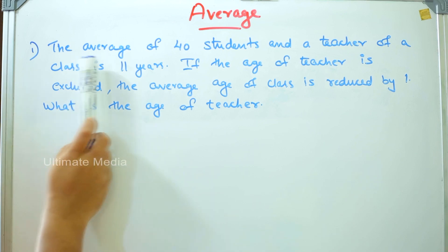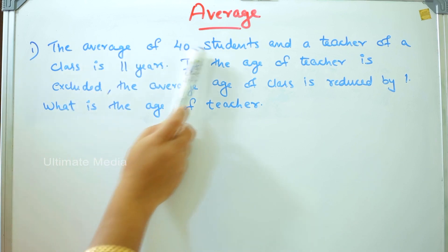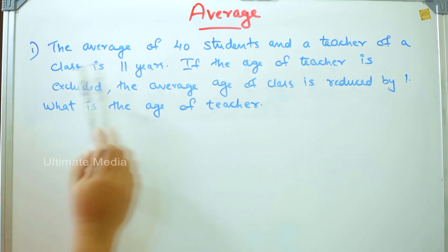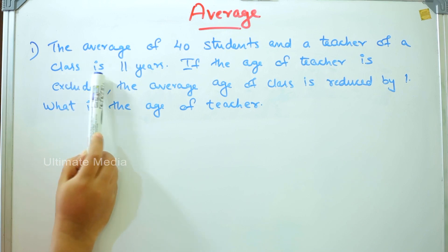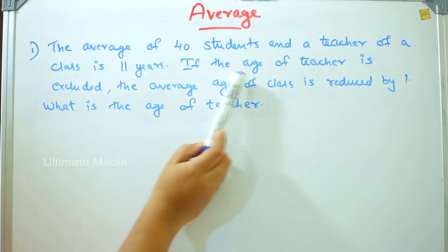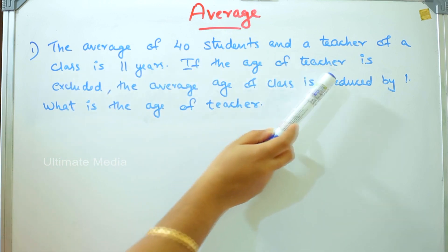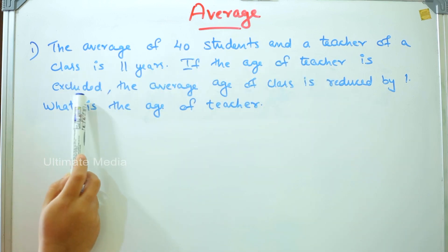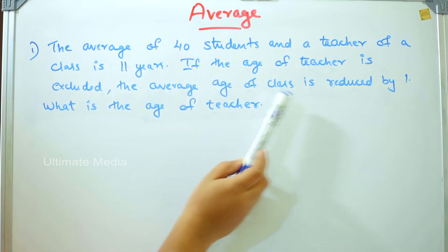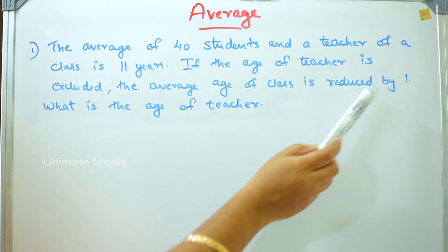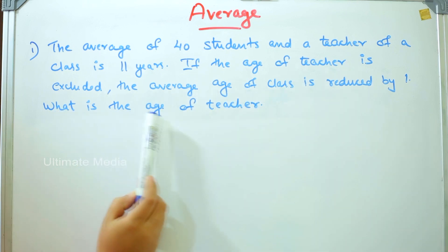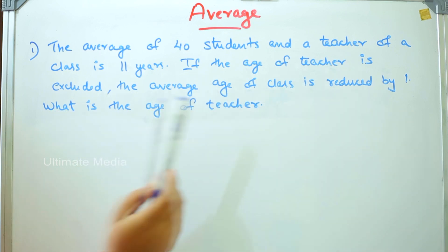The average of 40 students and a teacher of a class is 11 years. If the age of the teacher is excluded, the average age of the class is reduced by 1. What is the age of the teacher?